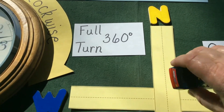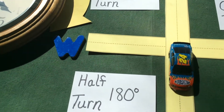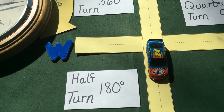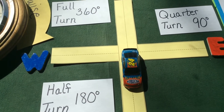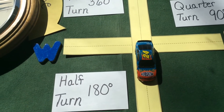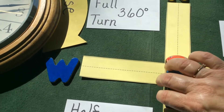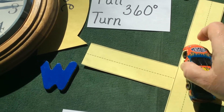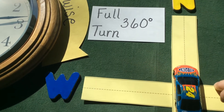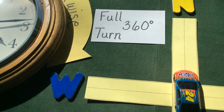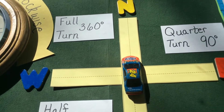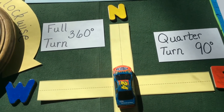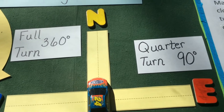Now, if he goes from north all the way to south and turns, it's called a half turn because it's halfway around the circle. That is 180 degrees, or 90 plus 90 makes 180. If he is going north and turns around all the way and makes a full turn, that's 360 degrees — 90 plus 90 plus 90 plus 90 — a full turn.